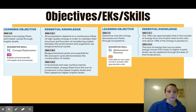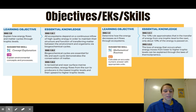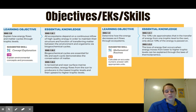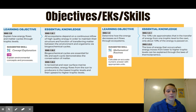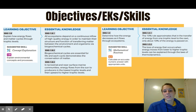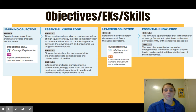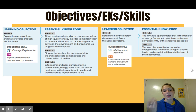We have a couple different sets of learning objectives. The first set is going to be: explain how energy flows and matter cycles through trophic levels. You're going to learn about ecosystems, the flow of energy, and how biogeochemical processes are essential for life. We'll also talk about terrestrial and marine communities. The second learning objective is to determine how energy decreases as it flows through ecosystems, including the 10% rule, and you will practice calculating an accurate numeric answer with appropriate units.